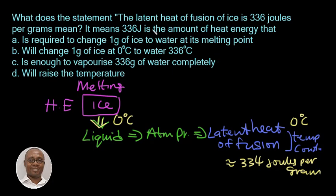Now let us check the question and answer option. The question says, it means that 336 joules is the amount of heat energy that A is required to change 1 gram of ice to water at its melting point. Yes. This answer option seems to be the correct one. Good.